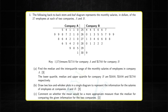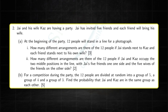Be aware that usually Cambridge tries to put a different graph in each variant. So one might have a histogram, another a cumulative frequency graph, and the third a stem and leaf diagram. So just make sure that you're comfortable with all the different graphs.